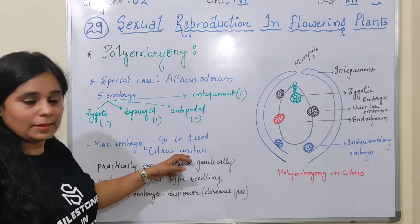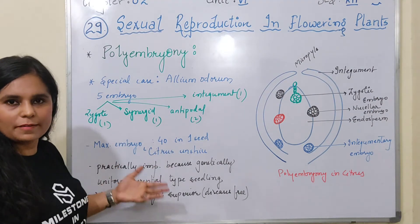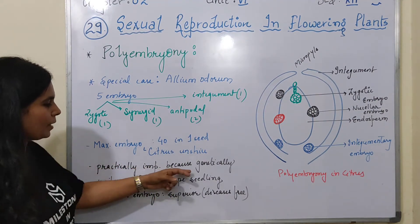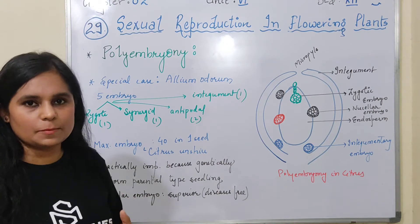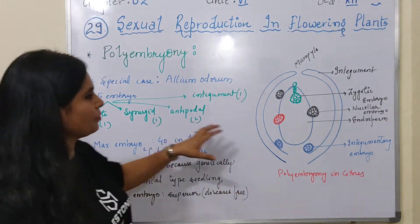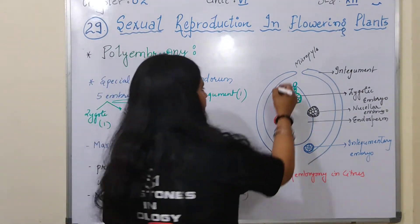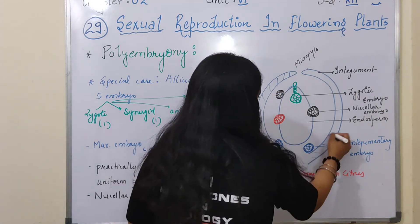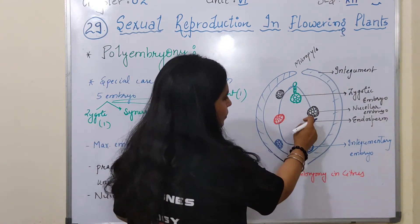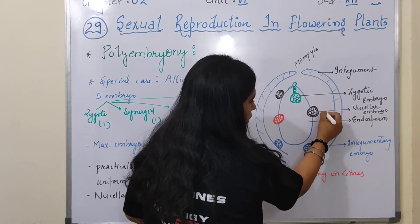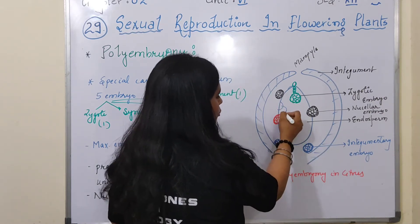In the case of citrus and mango, a maximum of up to forty embryos can be found in one seed. Looking at the diagram of citrus: there is the embryo sac with two integuments. At the micropyle end you can see the zygotic embryo. There are nucellar cells from which a nucellar embryo develops, an integumentary embryo, and the endospermic part.